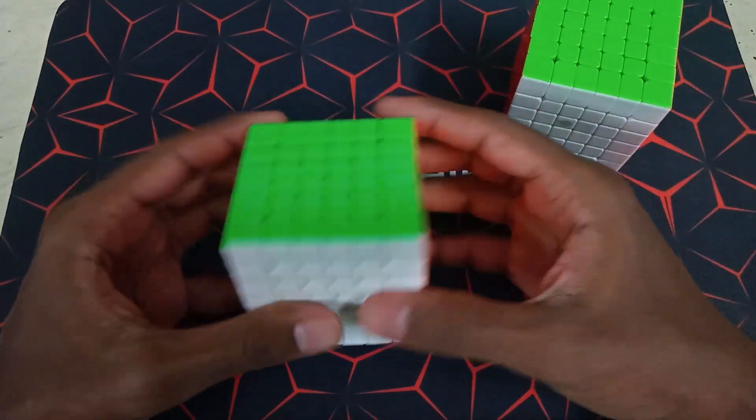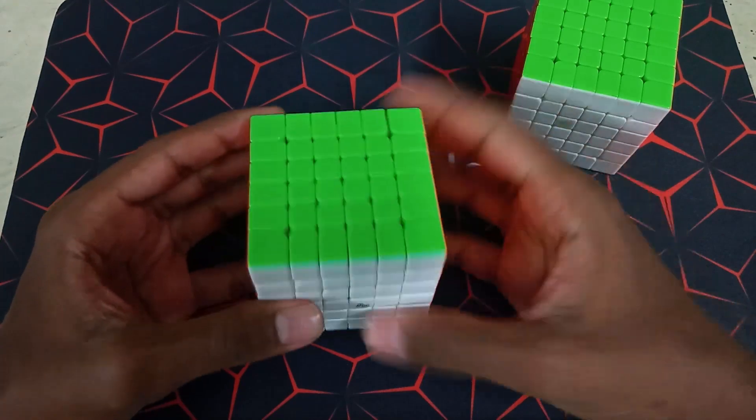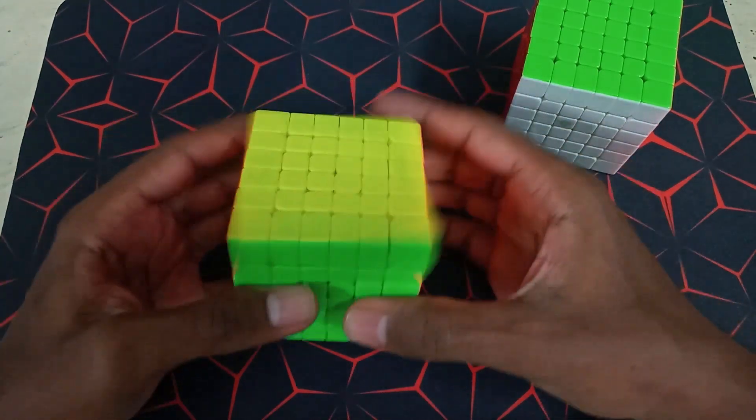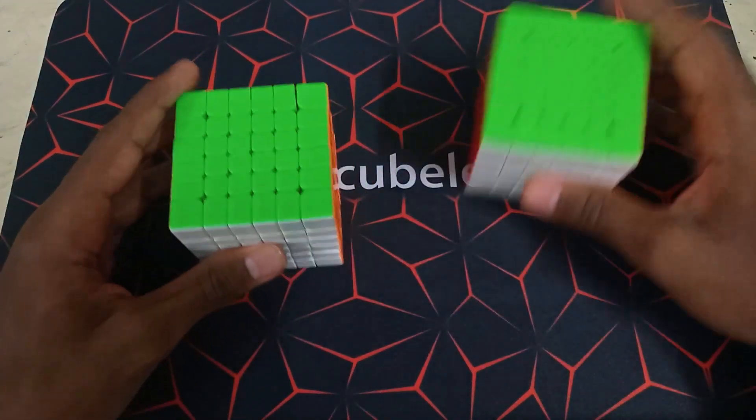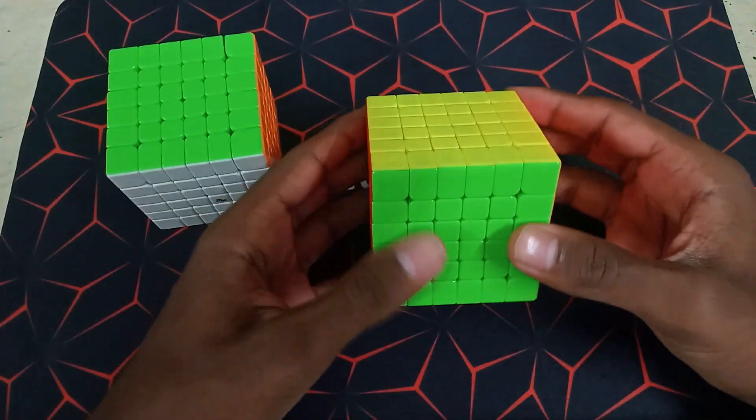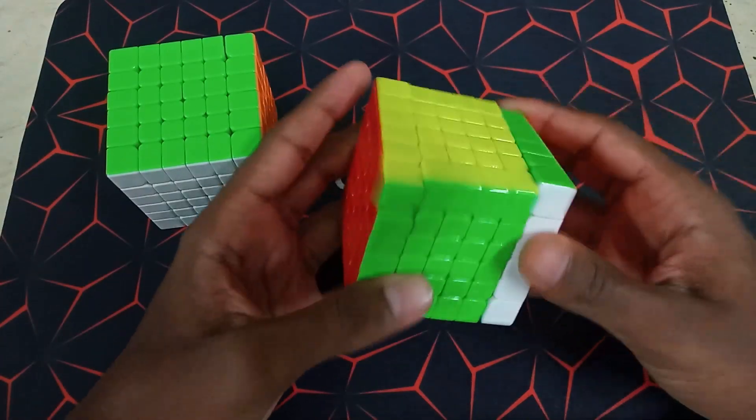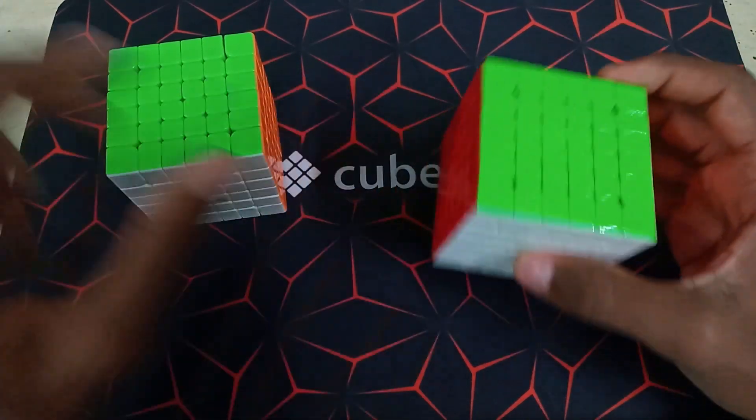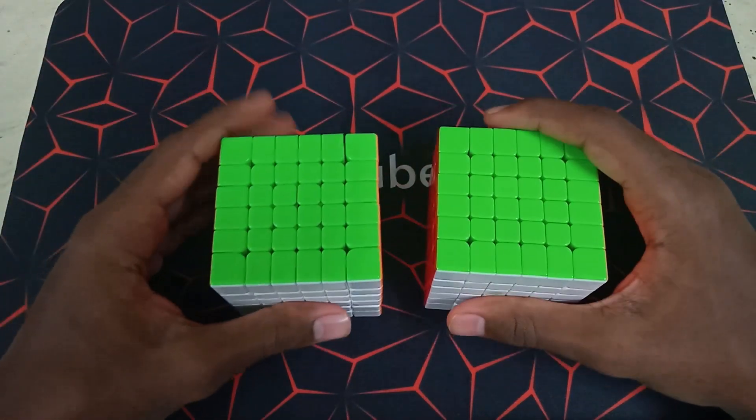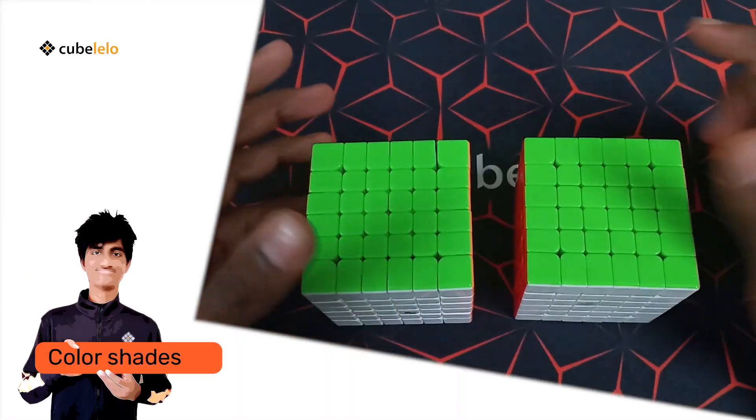So I would say the MGC, since it's slightly lighter, is more easy to do cube rotations and slices and stuff like that. But at the same time, if you have a rough turning style, you would prefer the Shadow M because it's so heavy, it makes it slightly more stable. We'll come to the stability later in the video. So now we'll go on to the color shades.